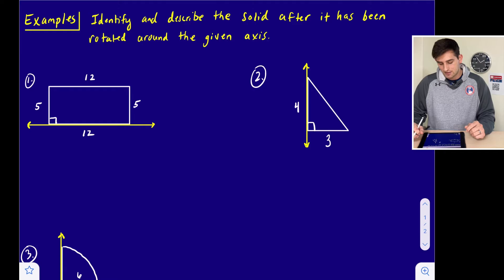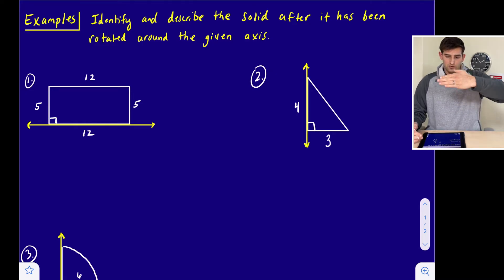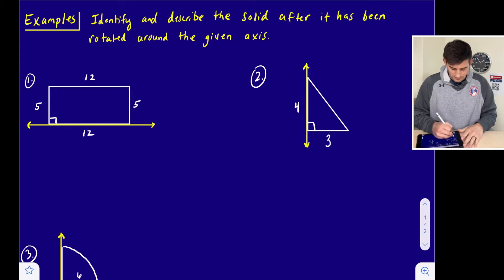We want to identify and describe the solid after it has been rotated around the given axis. If we look at number one, we're starting with a rectangle that has a length of 12 and a width of 5. If we think about this rectangle being rotated around this axis, it is going to create a cylinder. So if I try and draw this cylinder to the best of my ability,